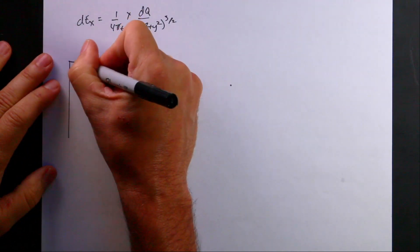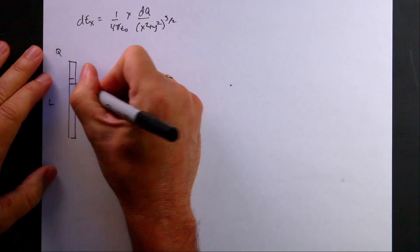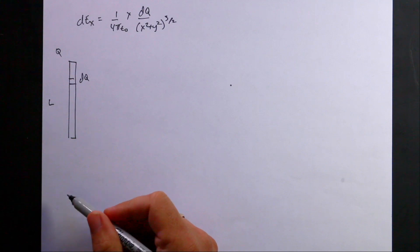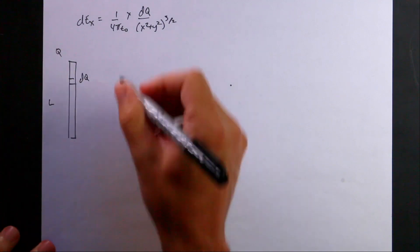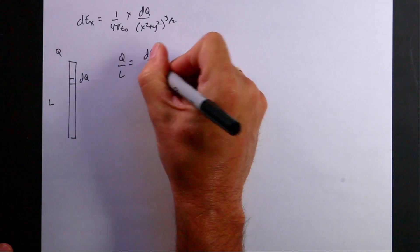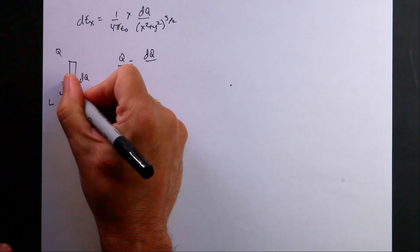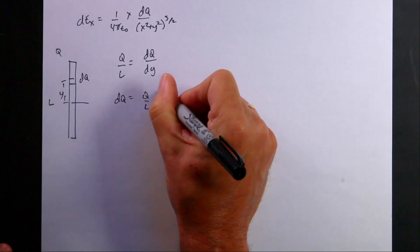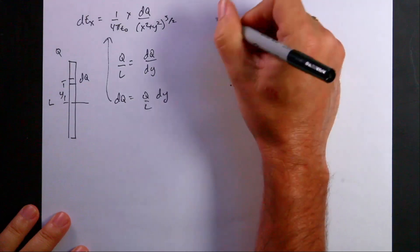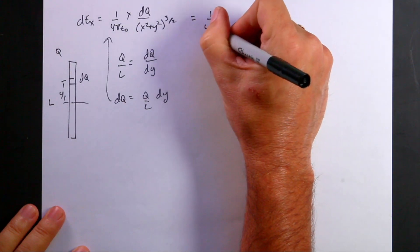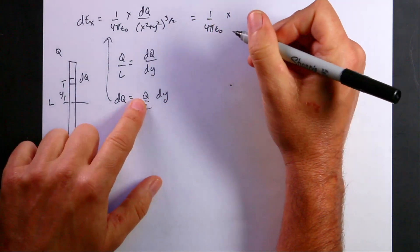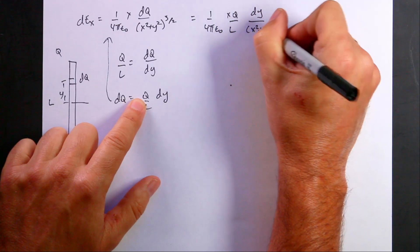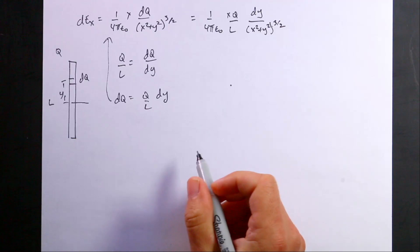Looking at the rod again: it has total length L and total charge Q, with a small piece DQ of length DY. Since the charge is uniformly distributed, the charge-to-length ratio is constant: Q/L = DQ/DY. Solving for DQ gives DQ = (Q/L) DY. Now I can substitute that in.